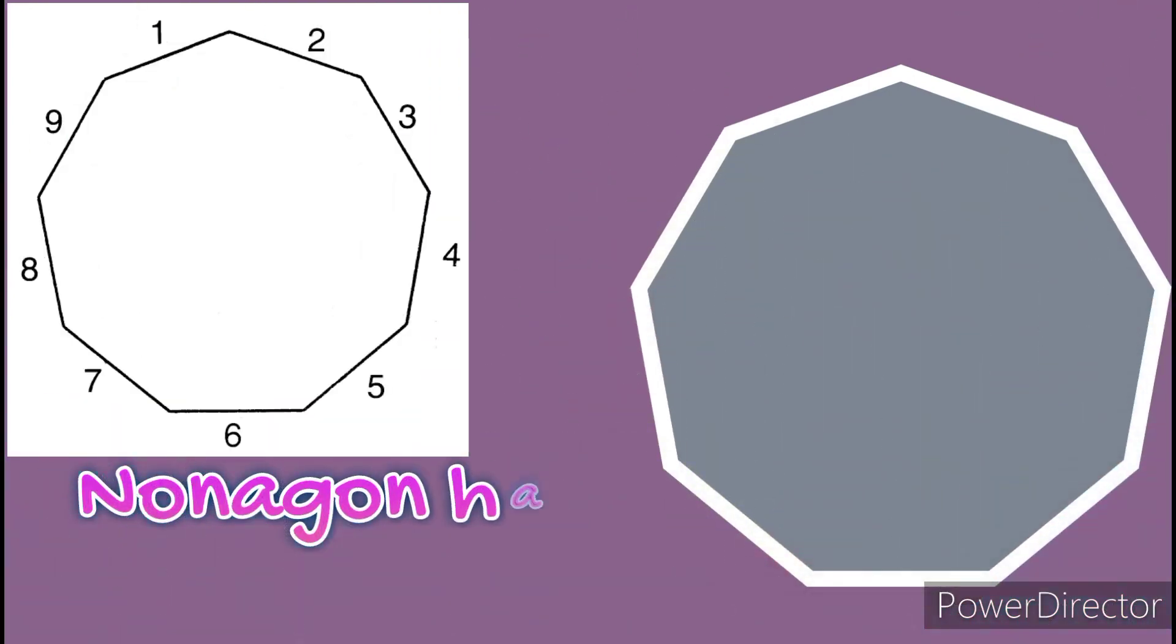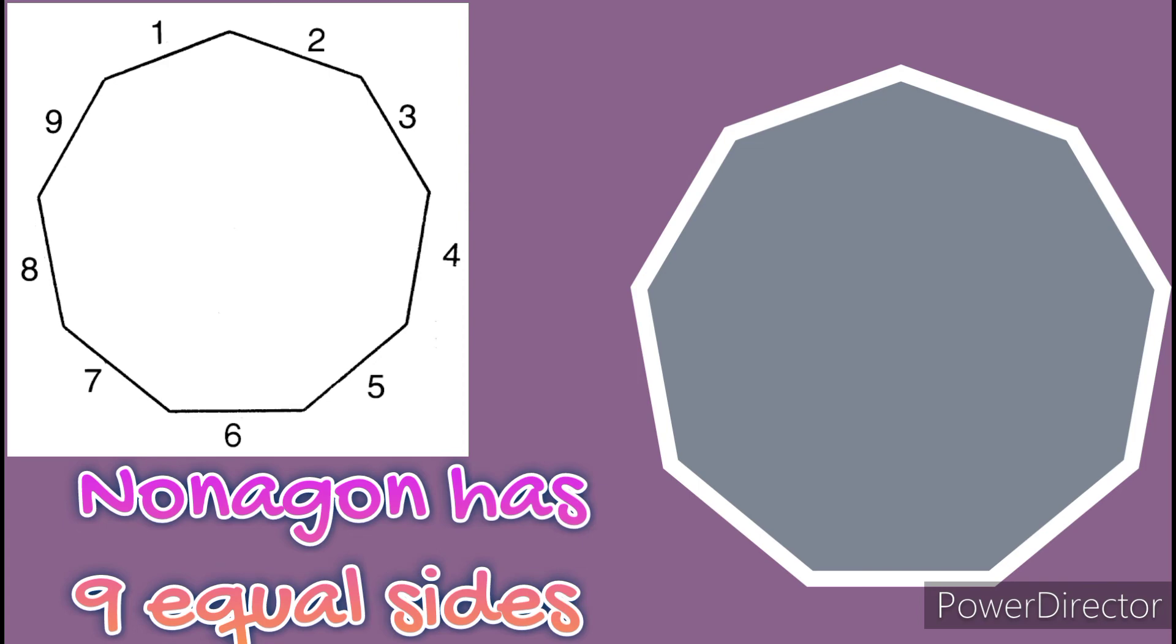Nonagon. Nona means nine, gon means sides. Nonagon has nine equal sides. Let's count: one, two, three, four, five, six, seven, eight, and nine.